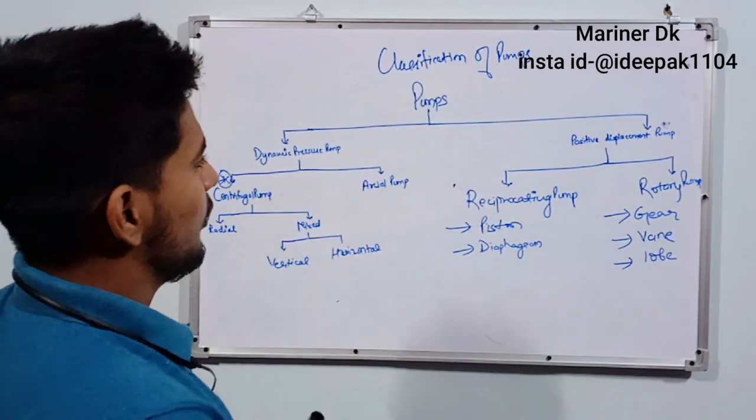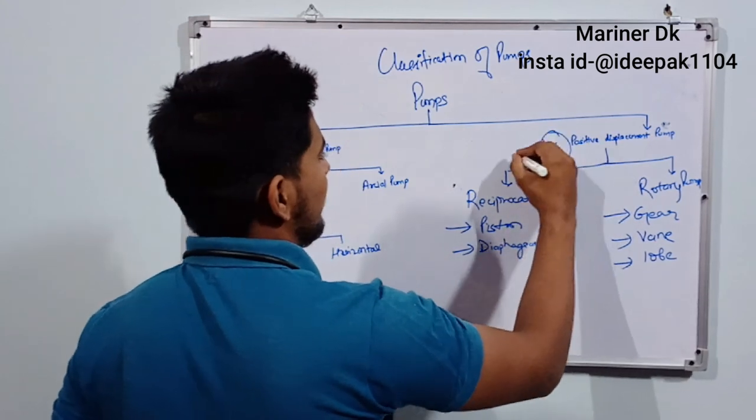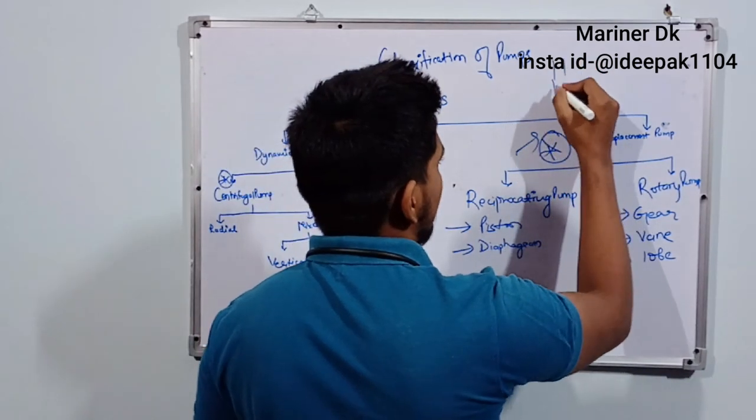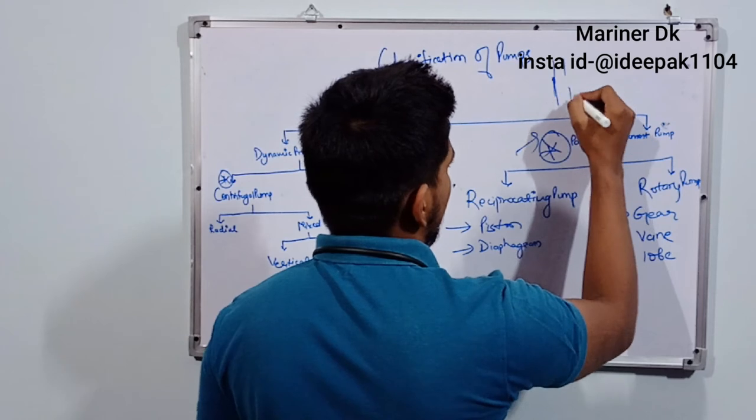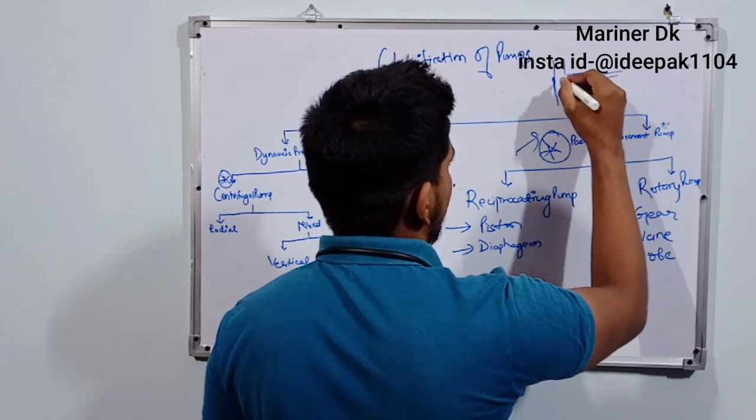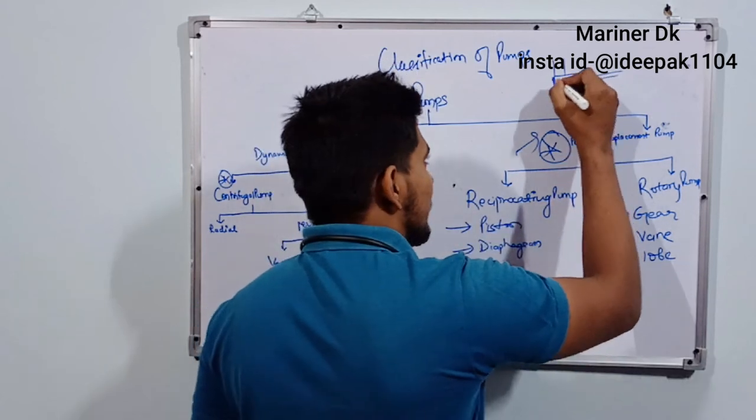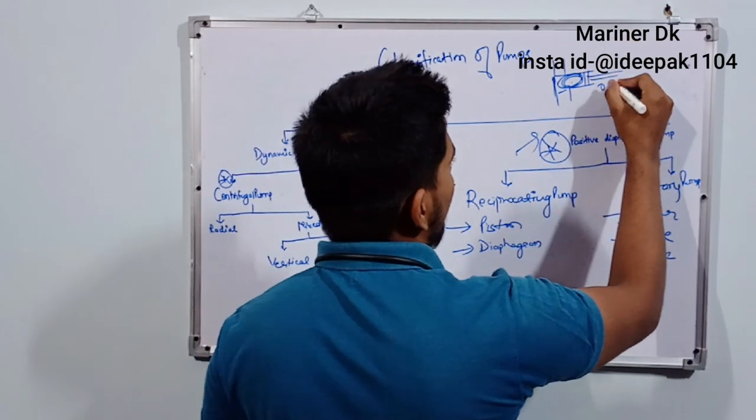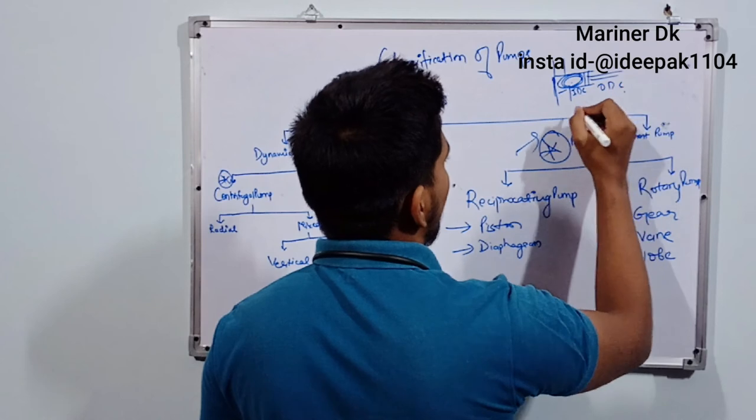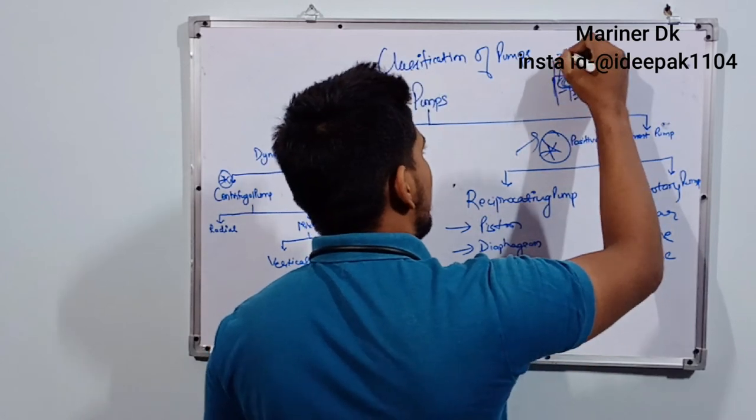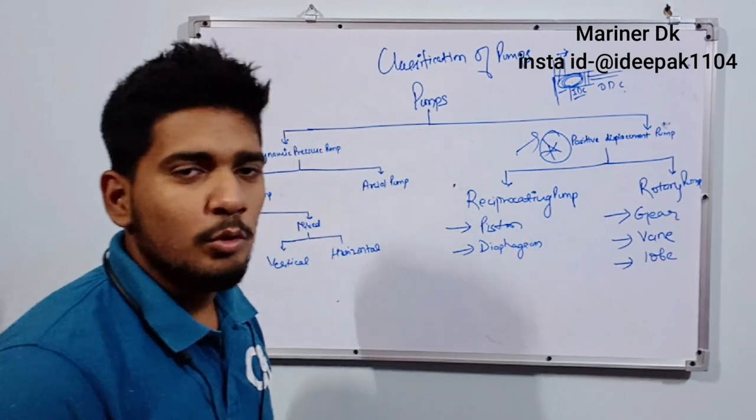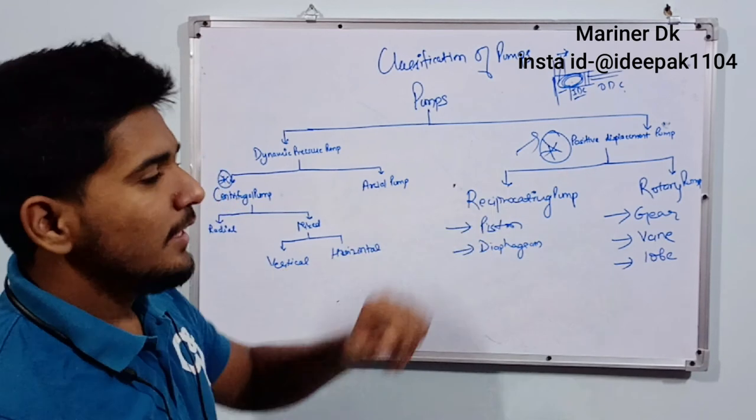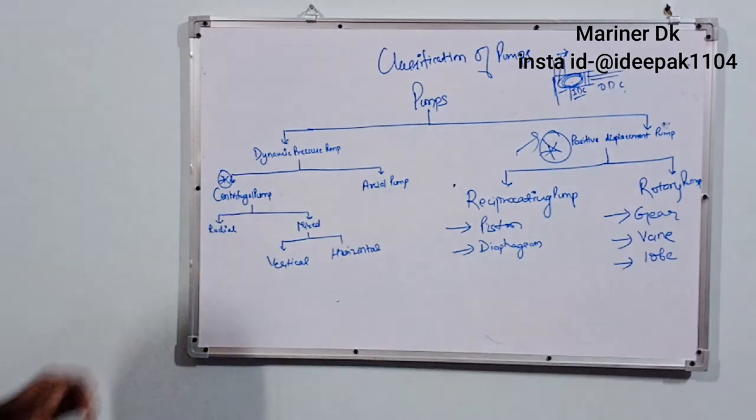So from the interview point of view, positive displacement pump, the question is why it is called positive displacement pump. Because this is the suction side, this is the discharge side. It sucks a fixed amount of volume into this cavity and then when it moves from the ODC to the IDC, outer dead center to inner dead center, it discharges the fixed amount of volume in every stroke. So discharge is fixed in the positive displacement pump. That's why they are called positive displacement pumps. So guys, you can note down this.